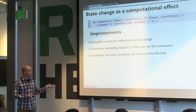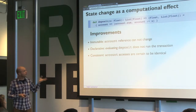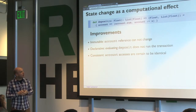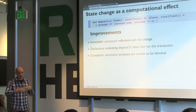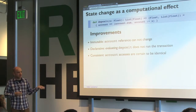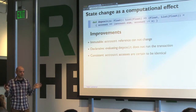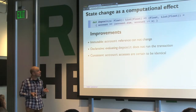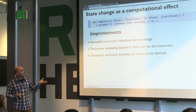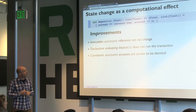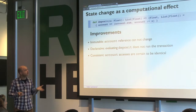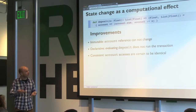We also have this declarative structure where, instead of the previous slide where calling deposit runs our business logic, in this case calling deposit just returns a function we can hang on to and run at a later time once we know what the account is. And it's consistent: within the body of this function we are certain that the account reference is the same for every access.